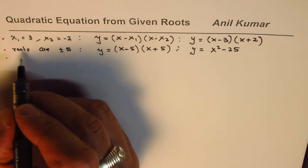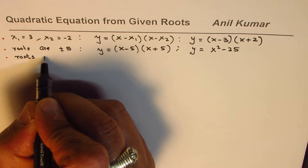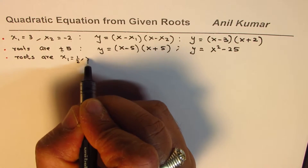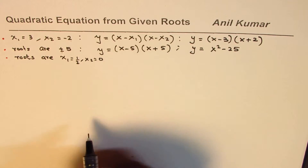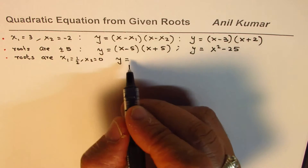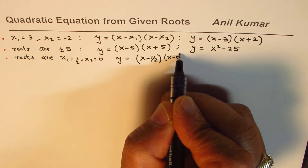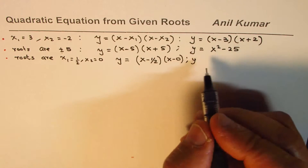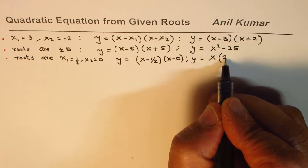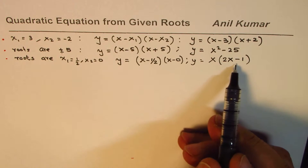You can also have roots in fractions. For example, let's say x1 equals one-half and x2 equals 0. In this case, y equals x minus one-half times x minus 0. Since x minus 0 is just x, and x minus one-half can be written as 2x minus 1, we write y equals x times 2x minus 1.